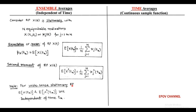For a wide-sense stationary random process, E[x(t_k)] and E[x²(t_k)] are independent of time t_k. This is about ensemble averages, which are independent of time.